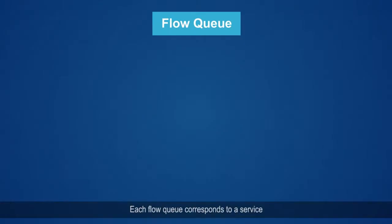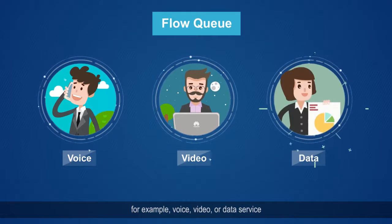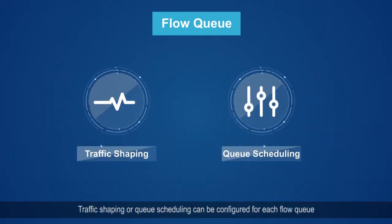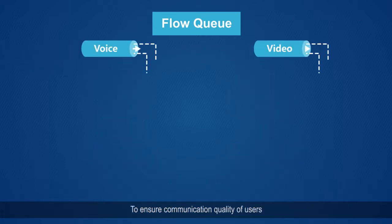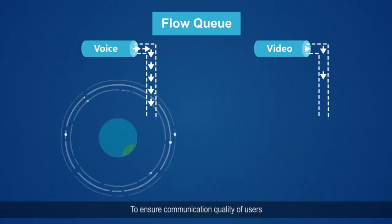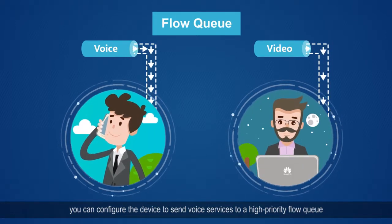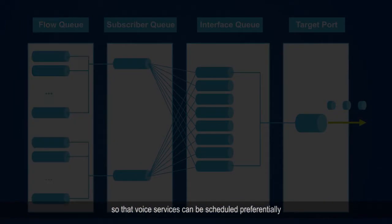Each flow queue corresponds to a service — for example, voice, video, or data service. Traffic shaping or queue scheduling can be configured for each flow queue to ensure that high-priority services are scheduled preferentially and assigned high bandwidth. For example, voice services can be sent to a high-priority flow queue so that they are scheduled preferentially.